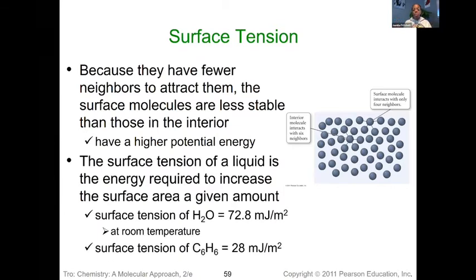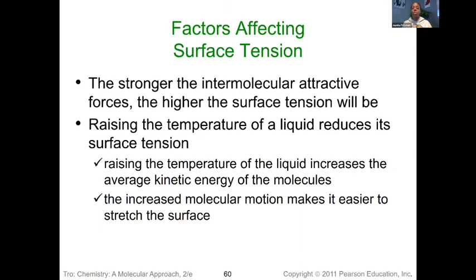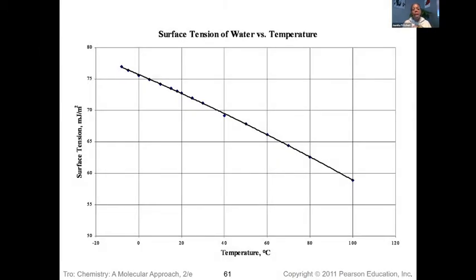The stronger those intermolecular forces are between neighboring molecules, the higher the surface tension will be. Changing things like temperature can also impact surface tension. The two take-home messages here are: the stronger the intermolecular forces, the higher the surface tension; and by raising the temperature we can actually reduce the surface tension. Raising the temperature weakens those intermolecular forces and separates them, so the strength in that layer of skin is reduced. We can see this shown graphically where there is a decrease in surface tension as we change the temperature of the water.